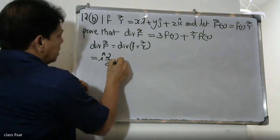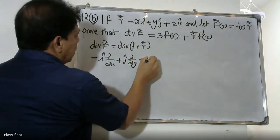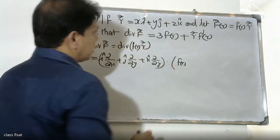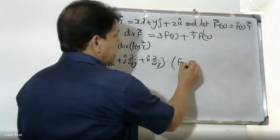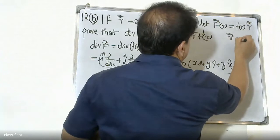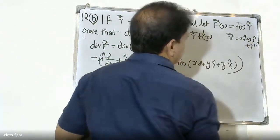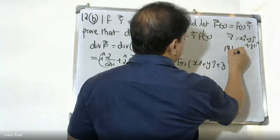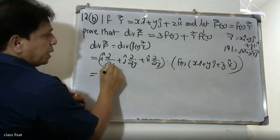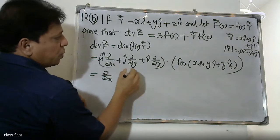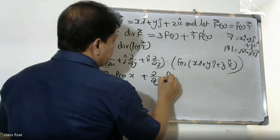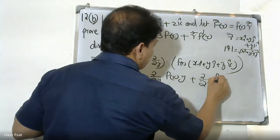We apply the del operator: i dou by dou x, j dou by dou y, k dou by dou z, applied to f(r) into xi plus yj plus zk. This gives us dou by dou x of f(r) into x, plus dou by dou y of f(r) into y, plus dou by dou z of f(r) into z.